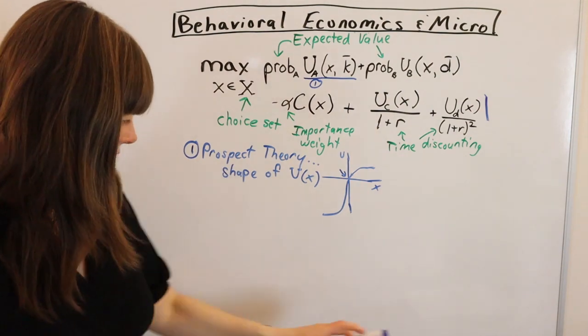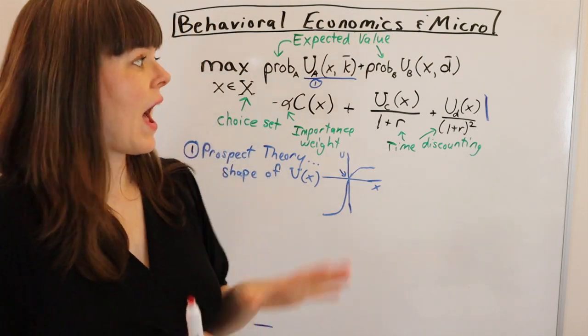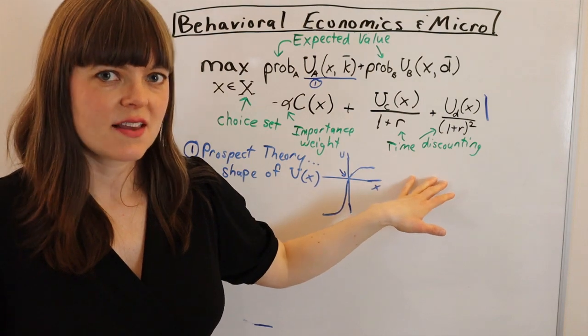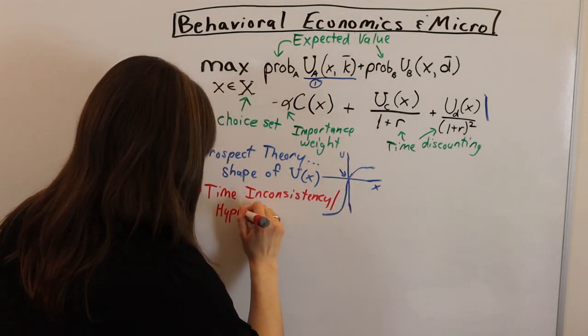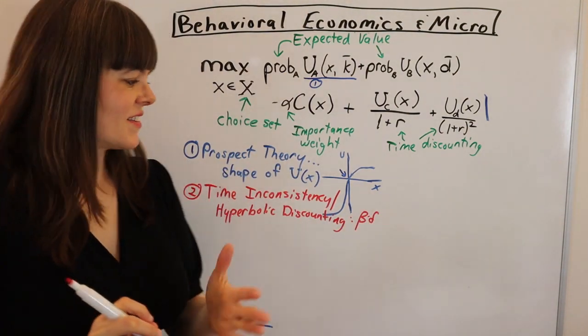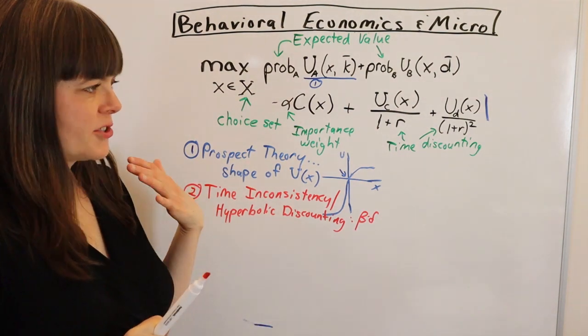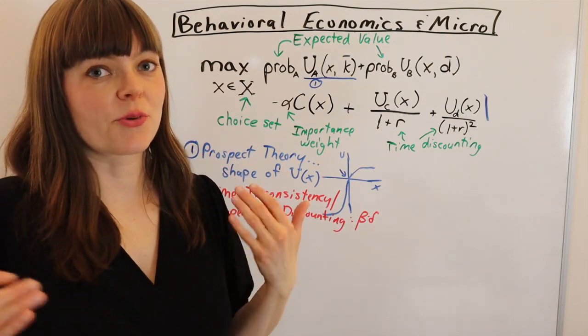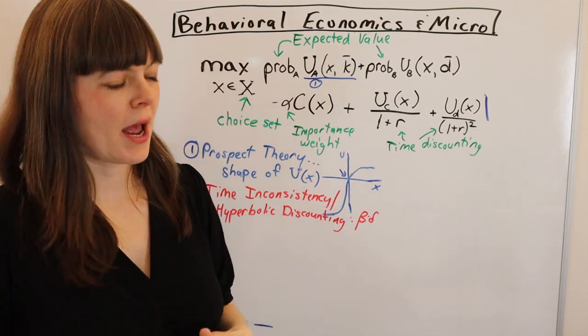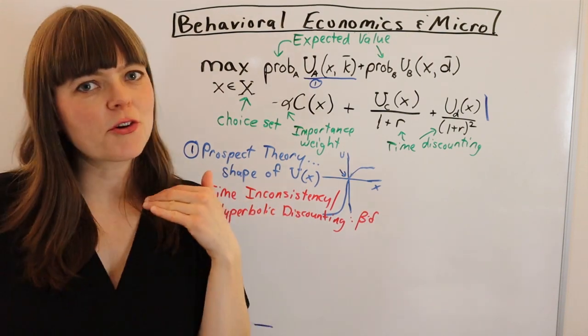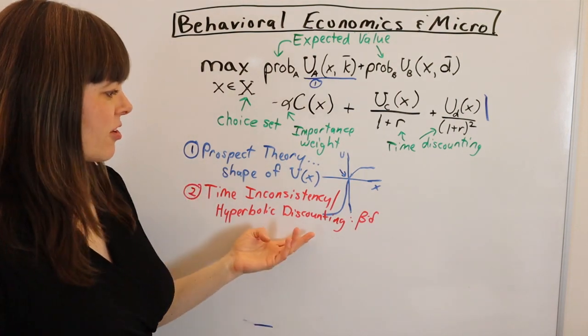Now our second big concept that behavioral economics adds to this model has to do with time discounting. In particular, it's going to be time inconsistency. So time inconsistency is going to capture a lot of concepts that have to do with regret. You do something now and you regret it later. It'll capture procrastination, compulsive overeating. It's basically where you overweight the value of right now and you underweight the future.